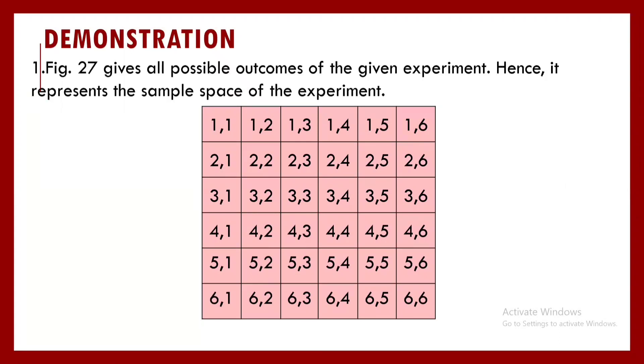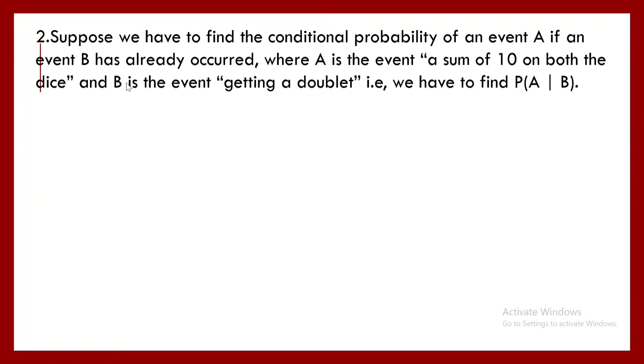Let us see the demonstration now. Figure 27, now this is the figure 27 that you're going to make, the table, gives all the possible outcomes of the given experiment. Hence it represents the sample space of the experiment. Now suppose we have to find out the conditional probability of an event A if an event B has already occurred. Now A and B are what? A is the event, a sum of 10 on both the dice.